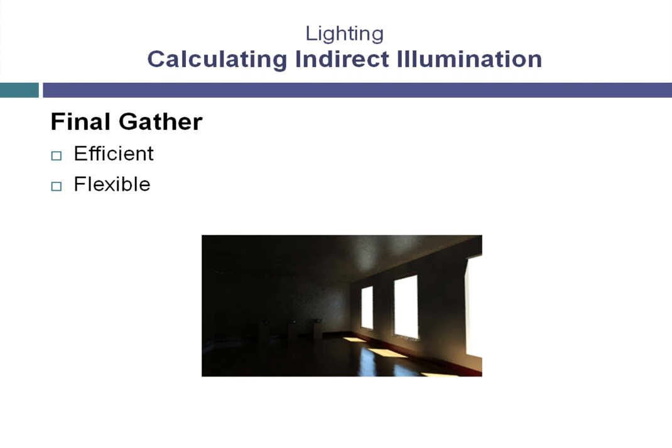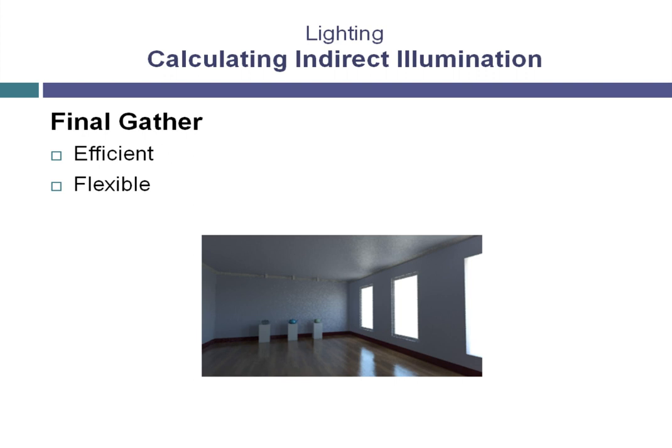However, this is only part of what Final Gather does with the daylight system. When using Final Gather with the daylight system, you're calculating not only the direct sunlight, but also the diffuse light that exists in the atmosphere caused by the direct sunlight scattered by the dust and water vapor that exists. This is what skylight generates in our scene. When we render the same scene with both sunlight and the skylight, we get a complete visual model of the light that enters the room from the exterior environment.